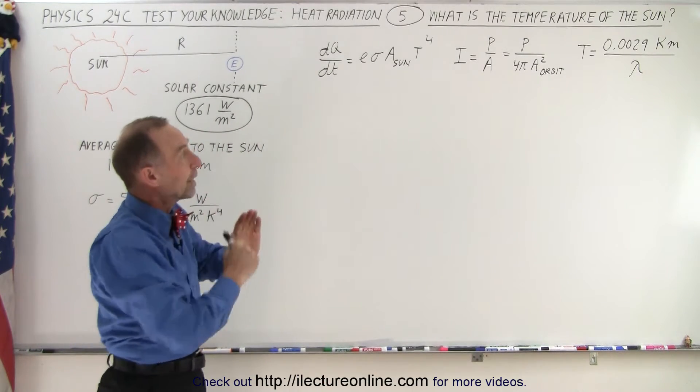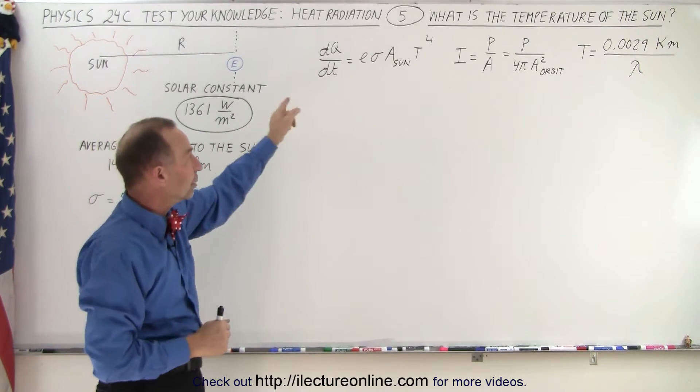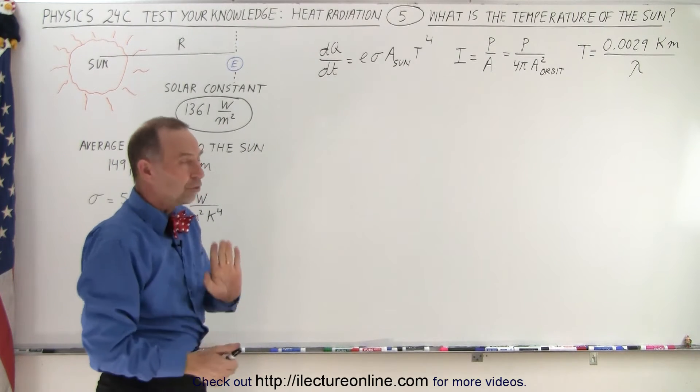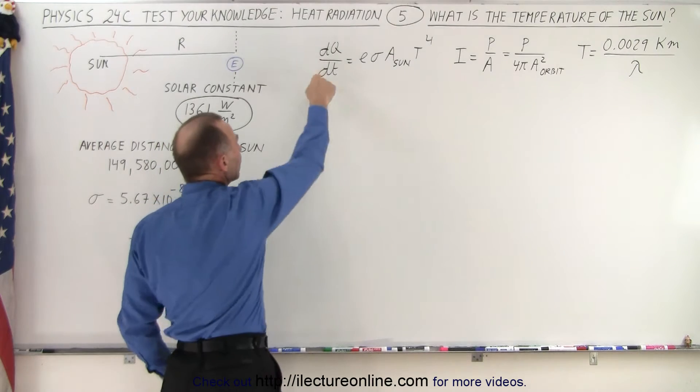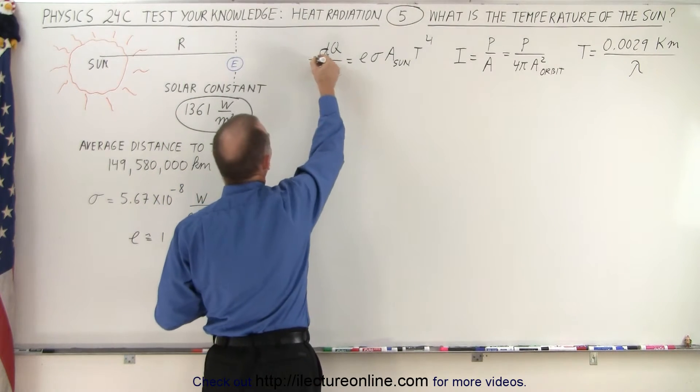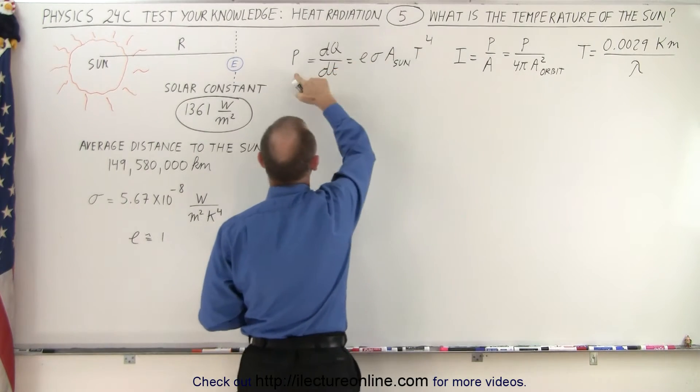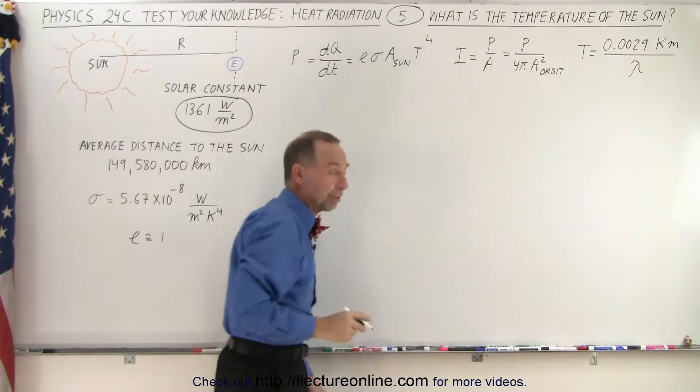Assuming that we don't know that we can use Wien's law, we'll need to use the other two equations. We need to realize dQ/dt is essentially the power output of the sun. So if we can figure out what the power is from this equation, plug it in here, we'll be able to calculate the temperature.